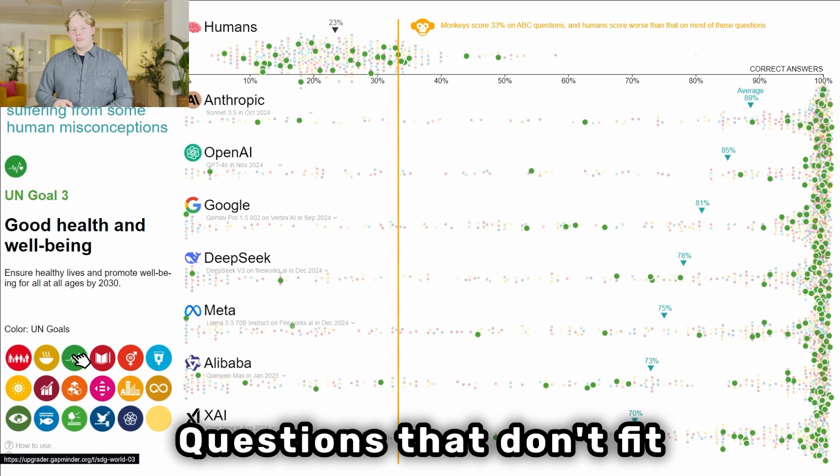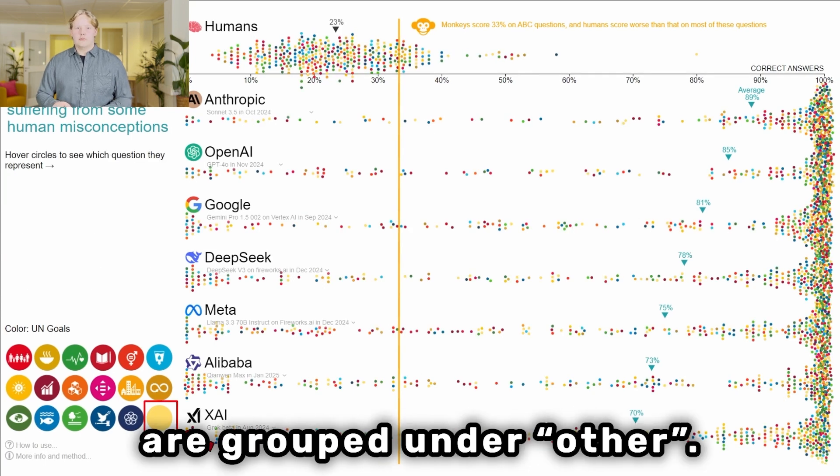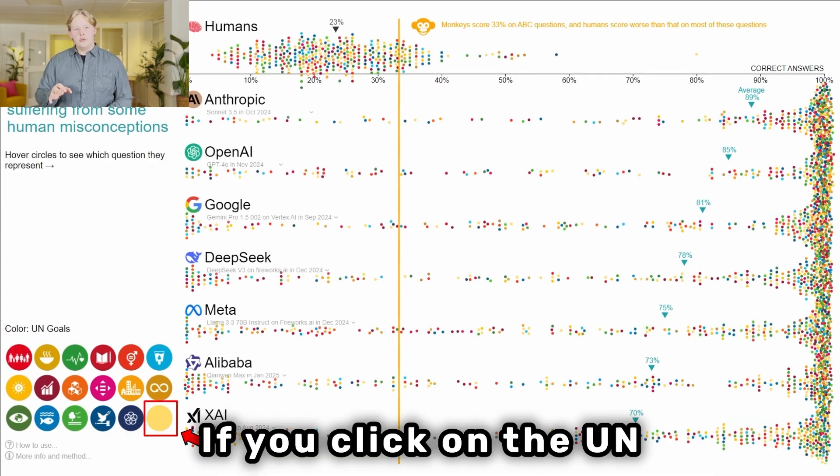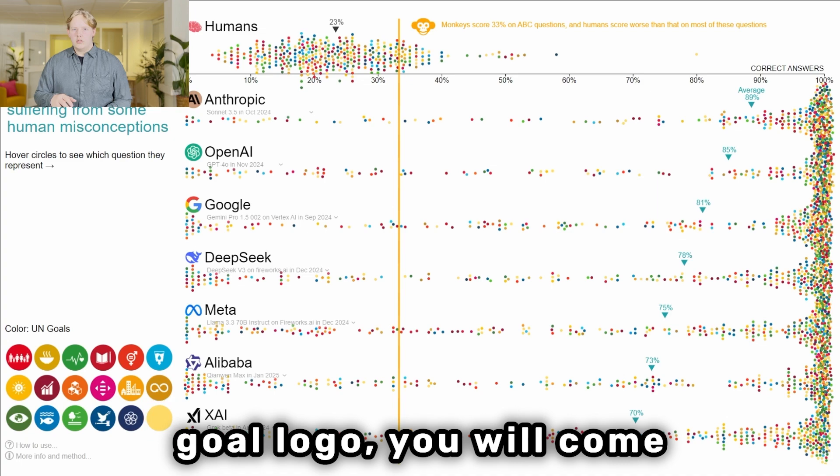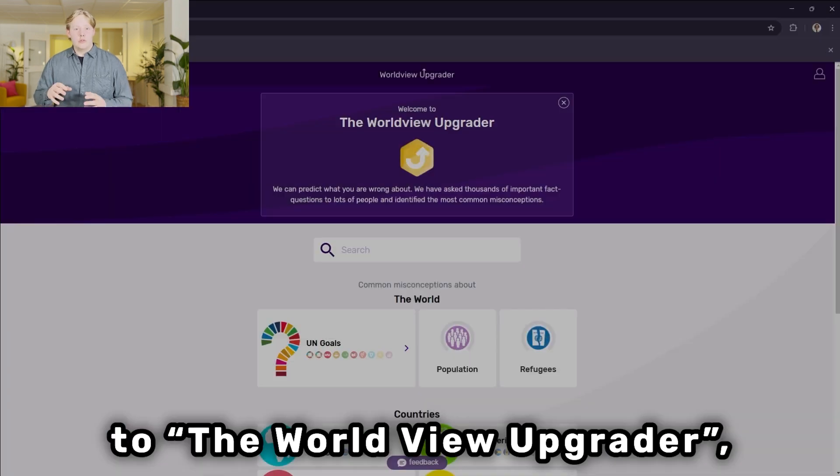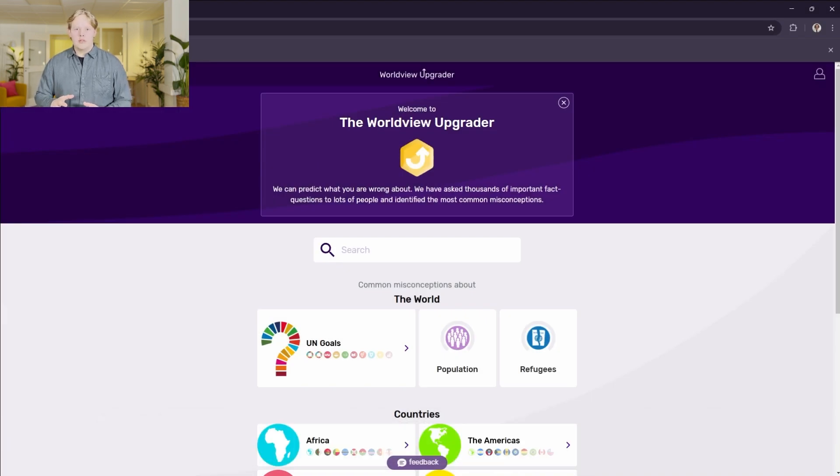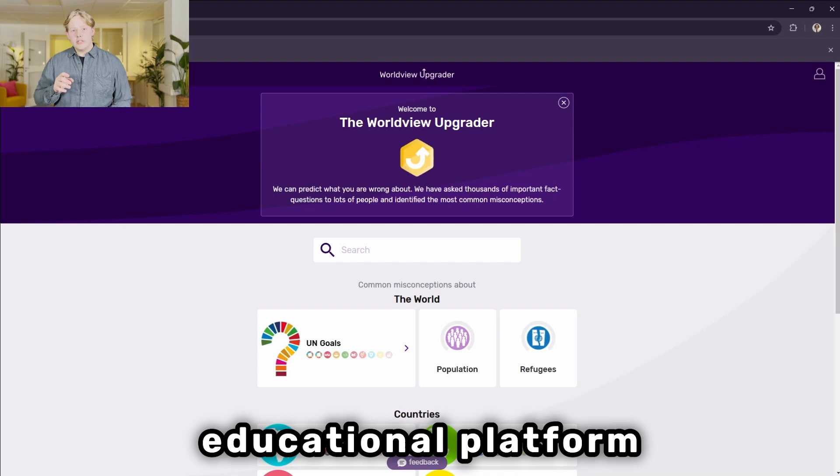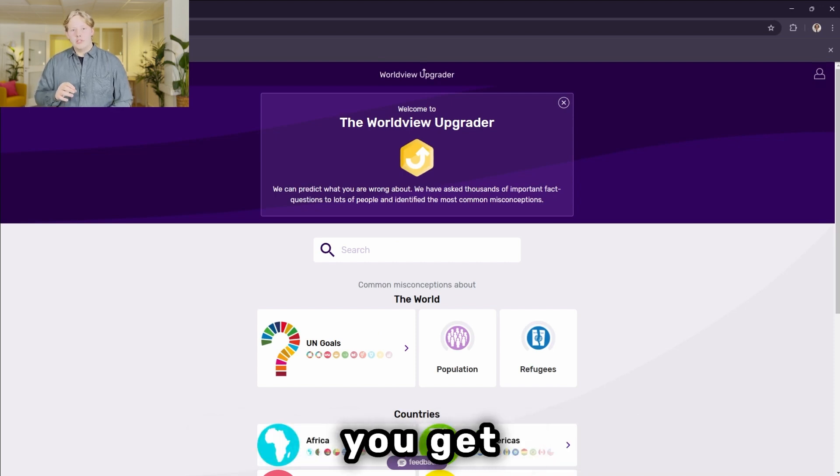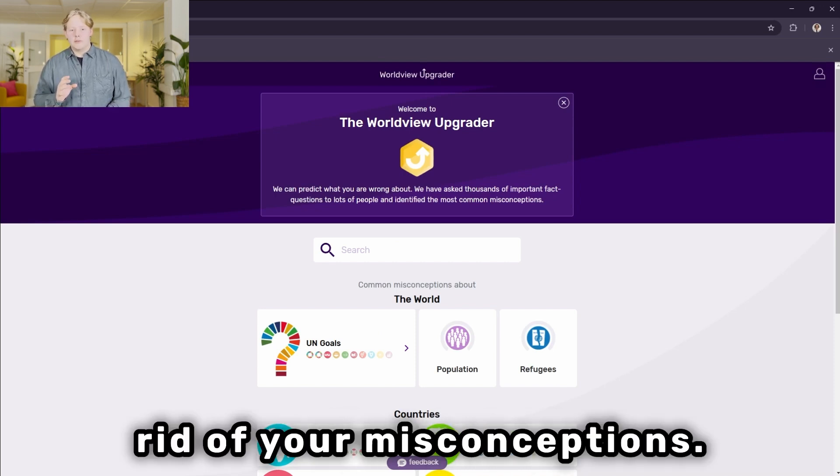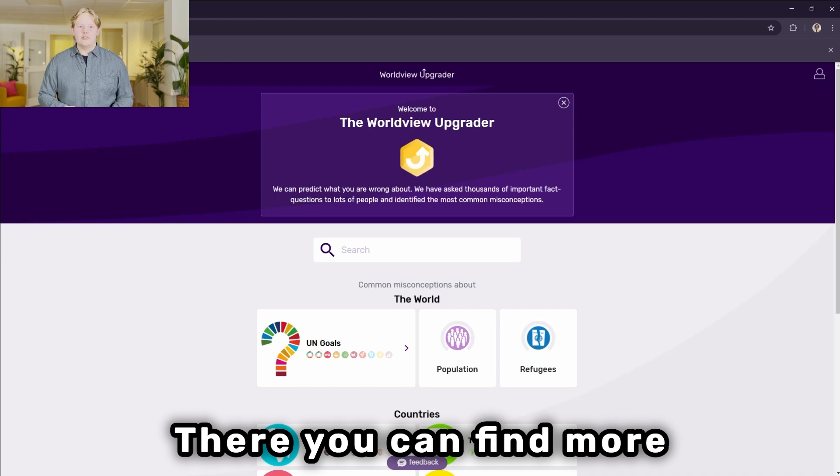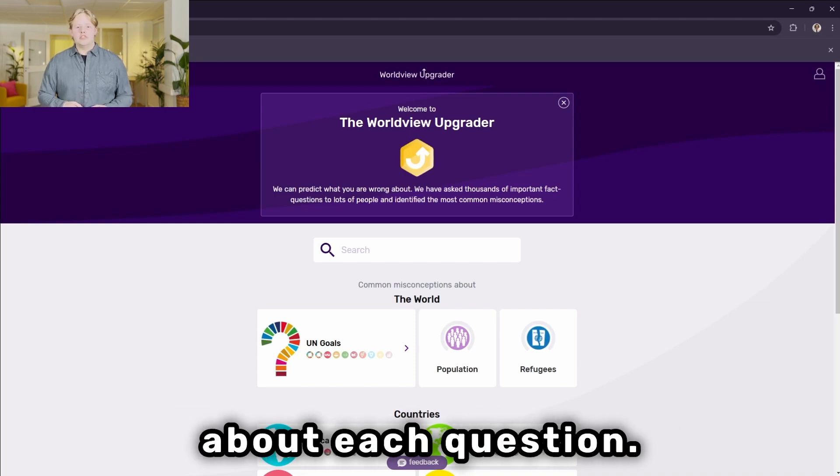Questions that don't fit a specific goal are grouped under other. If you click on the UN goal logo you will come to the worldview upgrader, which is Gapminder's educational platform for helping you get rid of your misconceptions. There you can find more about each question.